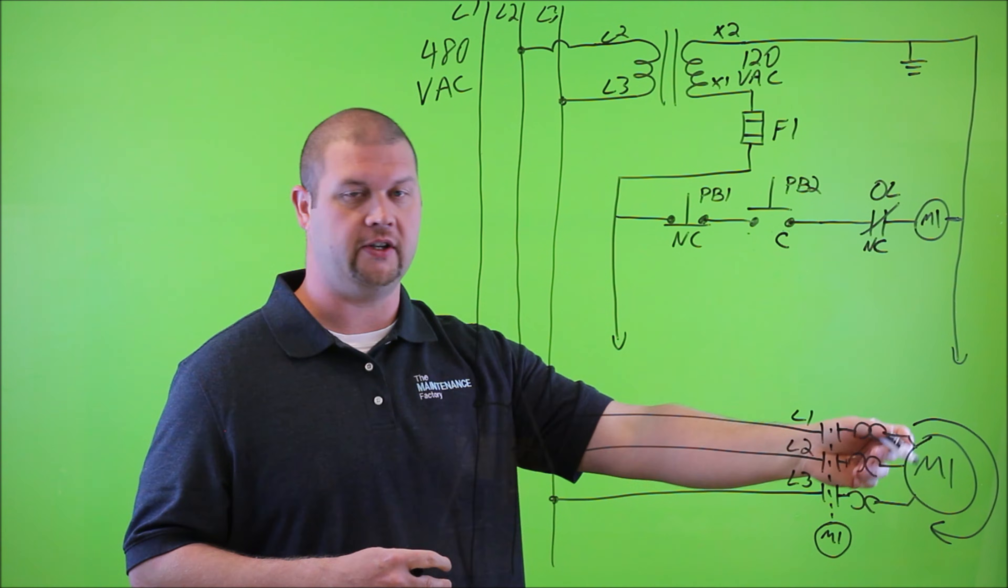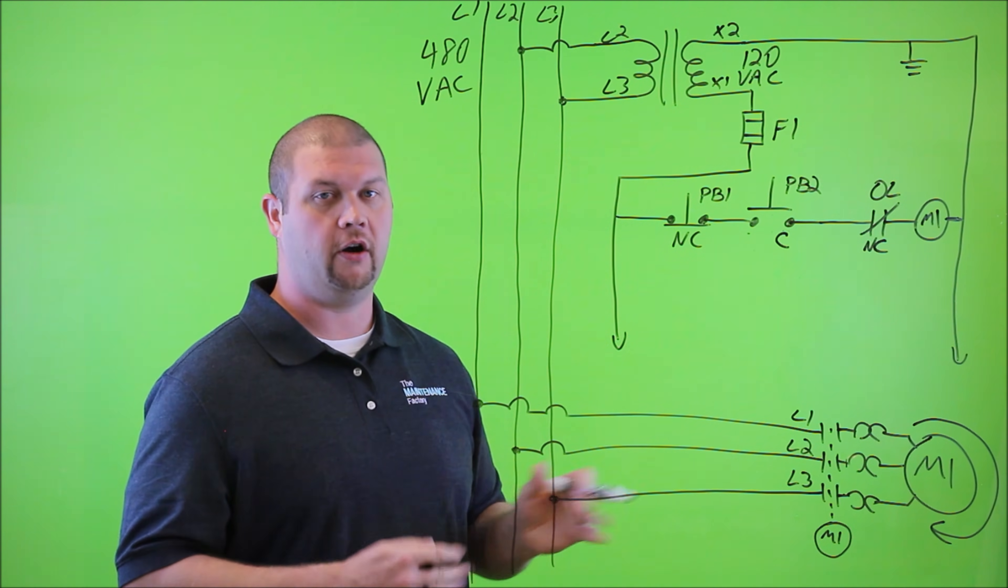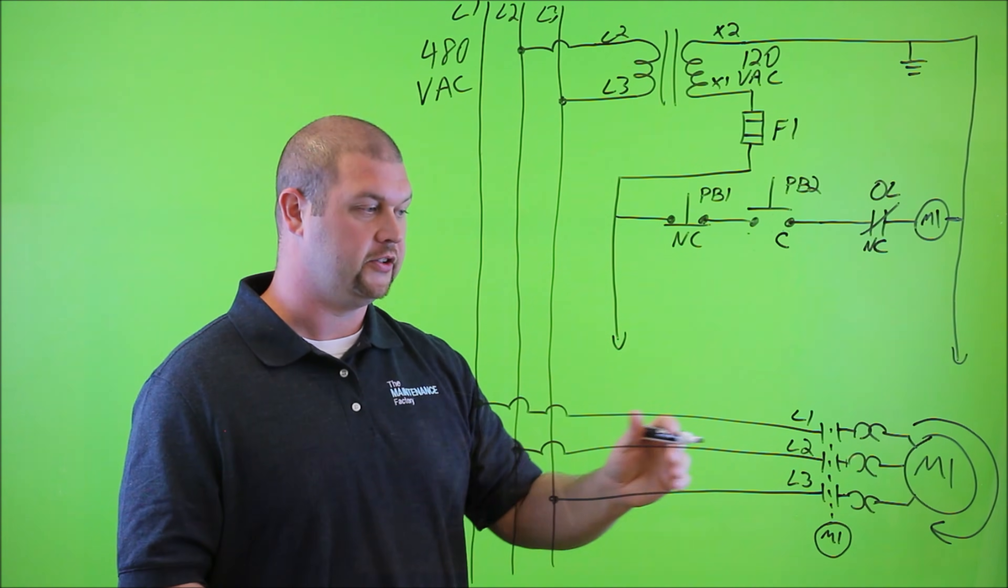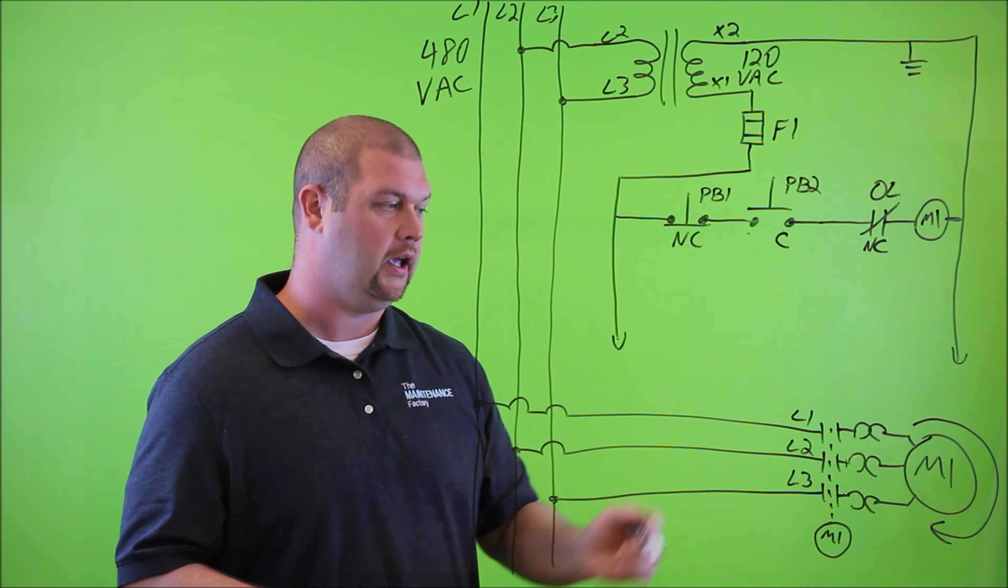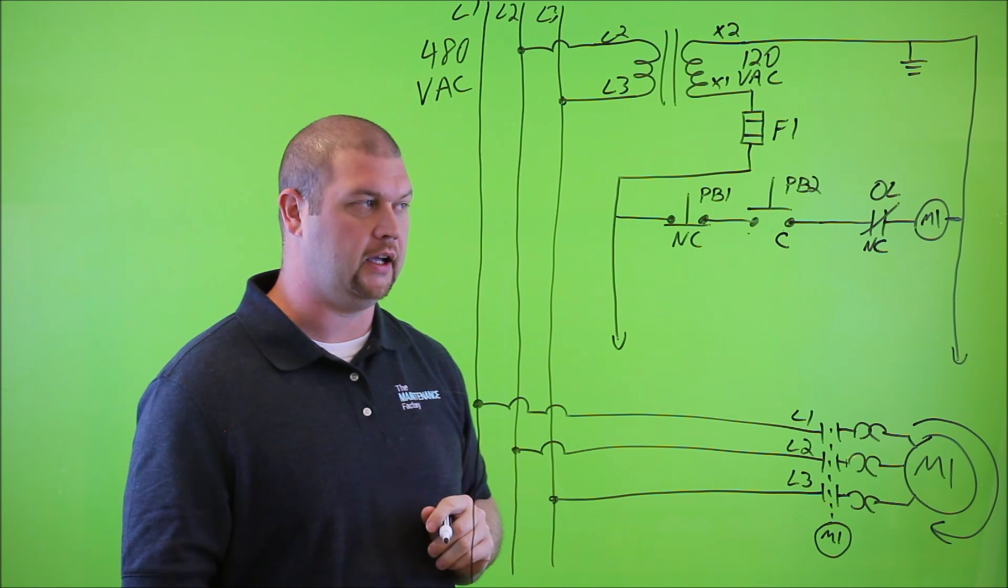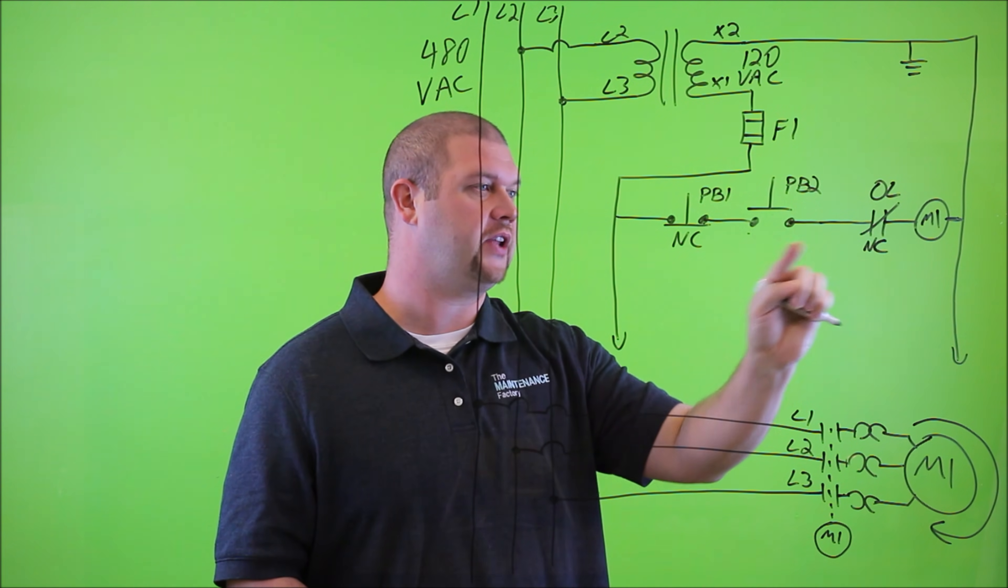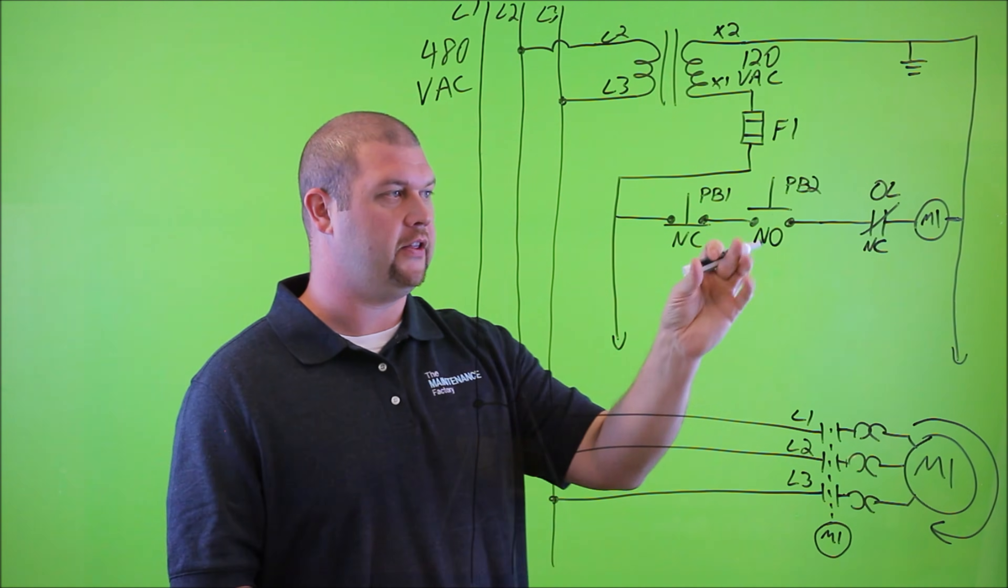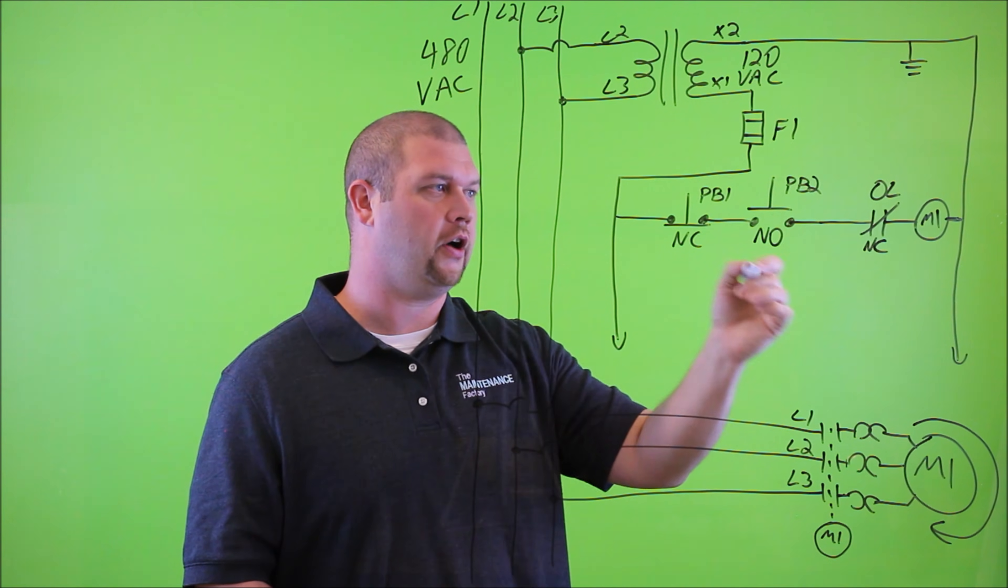Let's say, for example, this is an exhaust fan motor or an intake fan motor, and we don't want to sit here and hold our finger on the start button all day long. So the vital piece that is missing is the memory circuit or the holding circuit, and what we're going to do is draw it in next. Now, where that would need to go, this holding circuit or this memory circuit needs to go in across this start button.